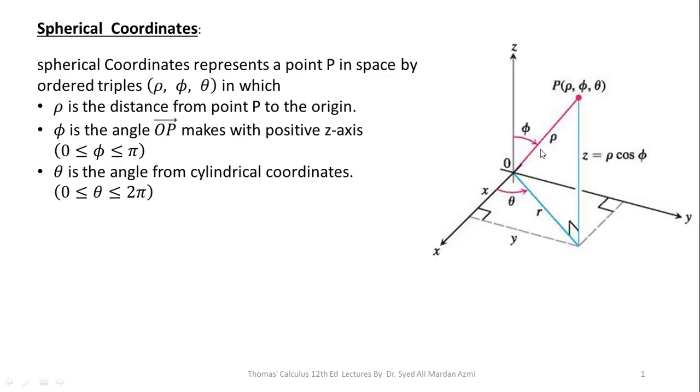φ is the angle OP makes with positive z-axis. This is the angle φ and θ is the angle from cylindrical coordinates which is with positive x-axis.